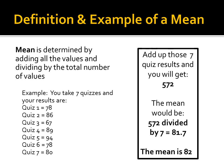Let's go over an example of the mean. Say you take seven quizzes in a class and your scores are 78, 86, 67, 89, 94, 78, and 80. You add up those seven quiz results and get 572. The mean is derived by taking 572 and dividing it by seven, because you took seven quizzes. That gives you 81.7, so rounding up, the mean is 82.